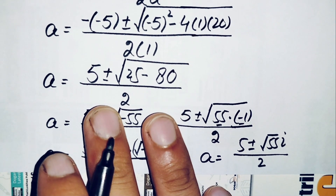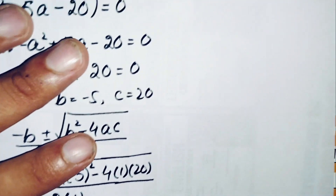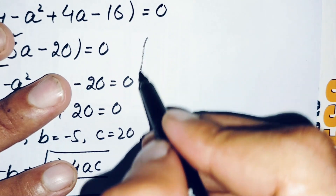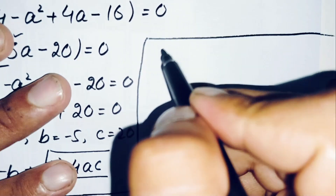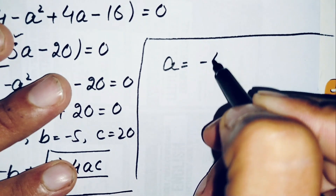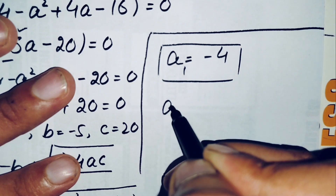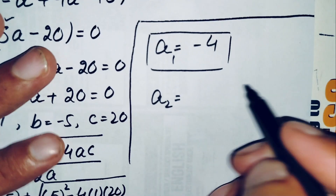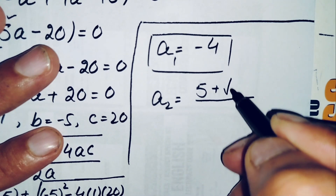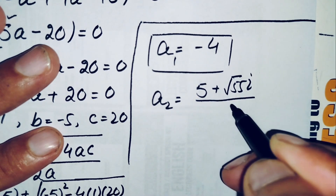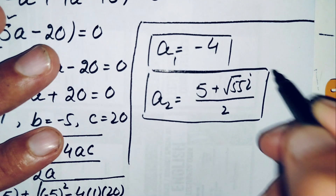So finally we have three solutions of a. The first solution is a equals negative 4, which is a real number. The second and third solutions are complex: a equals 5 plus or minus square root of 55 times i, divided by 2.